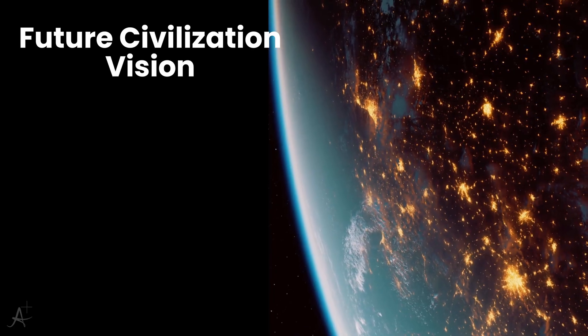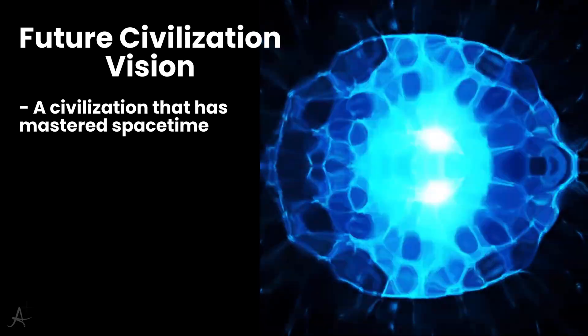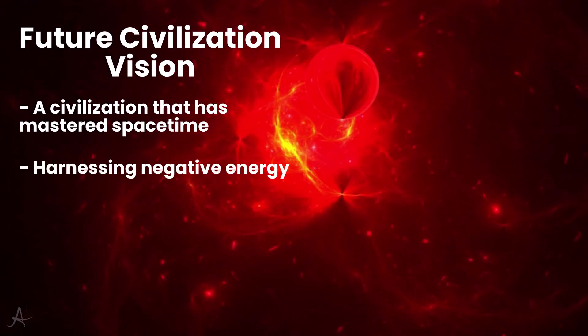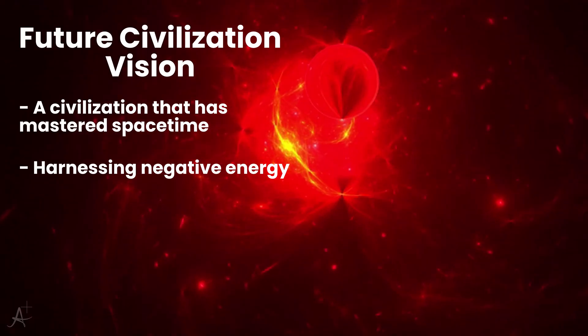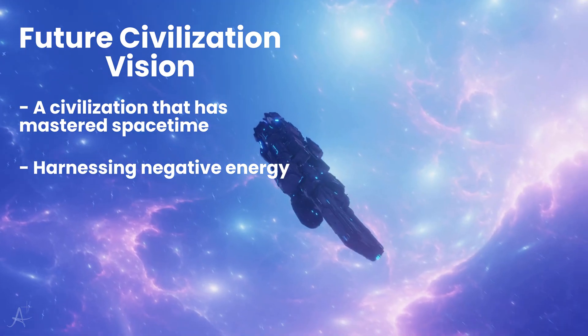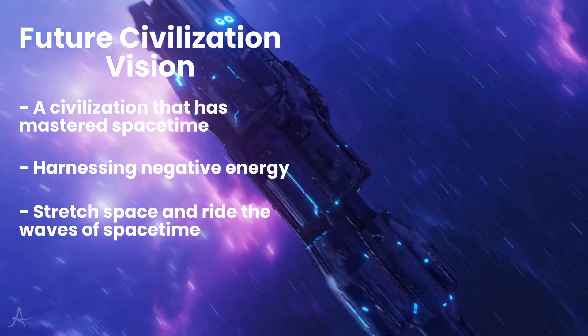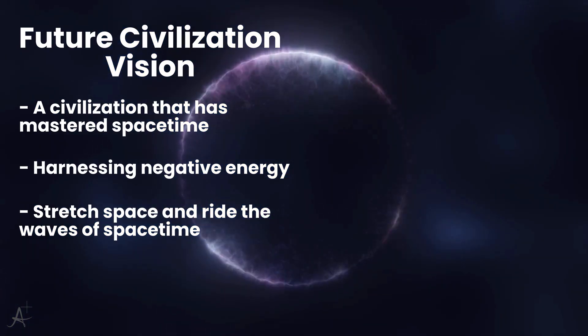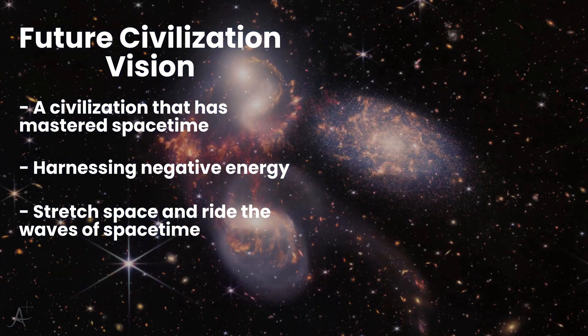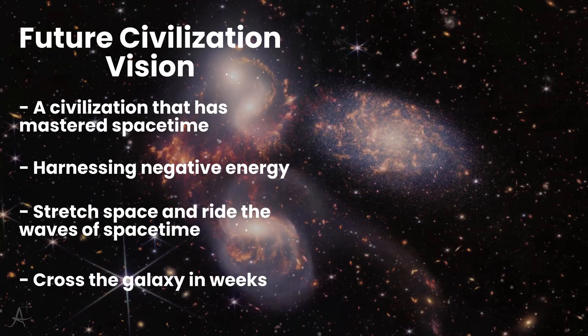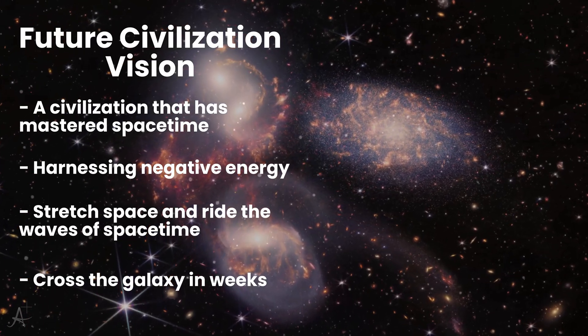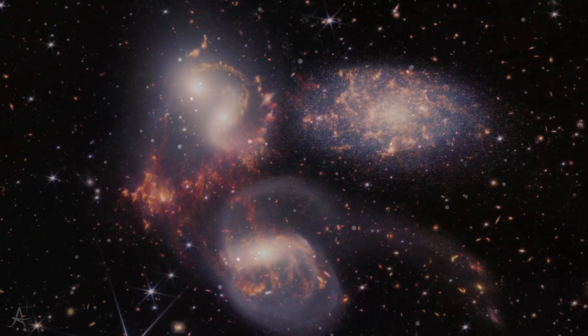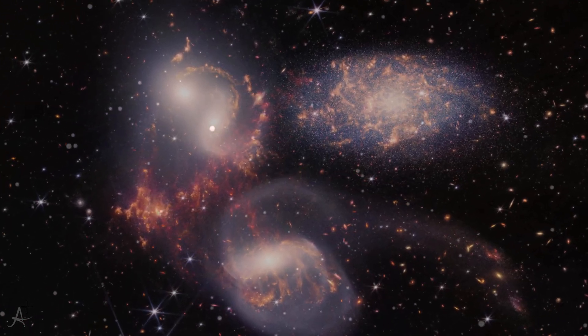Let's picture it for a moment, though. A civilization that has mastered spacetime. Maybe, in a distant future, humanity learns to manipulate energy on cosmic scales. Maybe we discover a way to generate stable negative energy, and with it, create tiny distortions in space. We learn to stretch space behind a ship and squeeze it ahead, creating a ripple, a spacetime wave we can surf. Inside the bubble, time passes normally. Outside, the stars blur past faster than light. You could cross the galaxy in weeks, explore other star systems, even reach galaxies millions of light-years away. All without breaking the cosmic speed limit, because from your point of view, you never actually moved faster than light. You simply moved with spacetime itself.